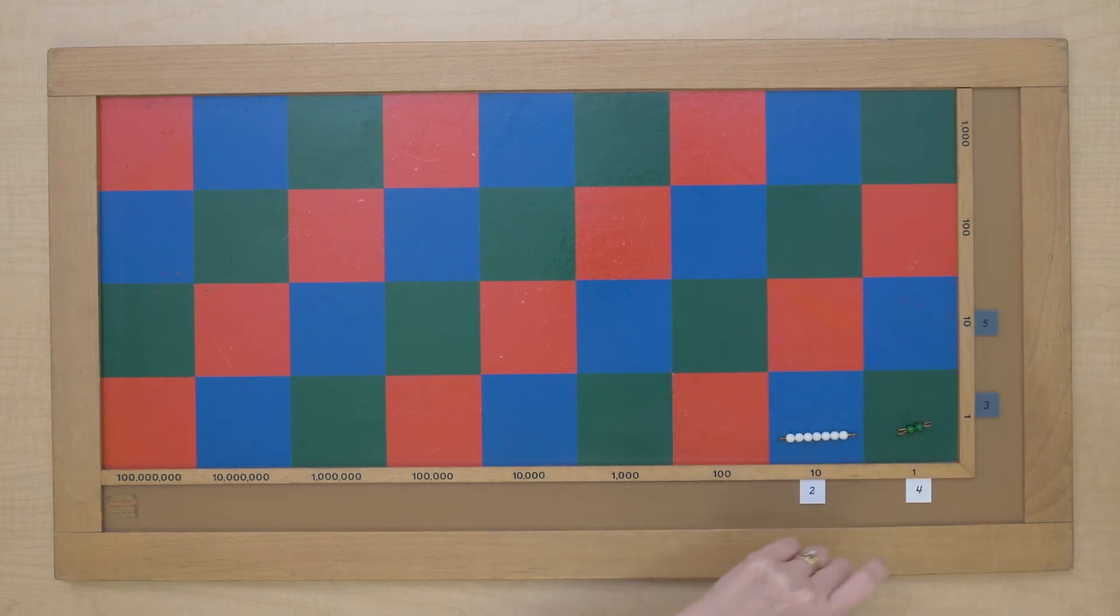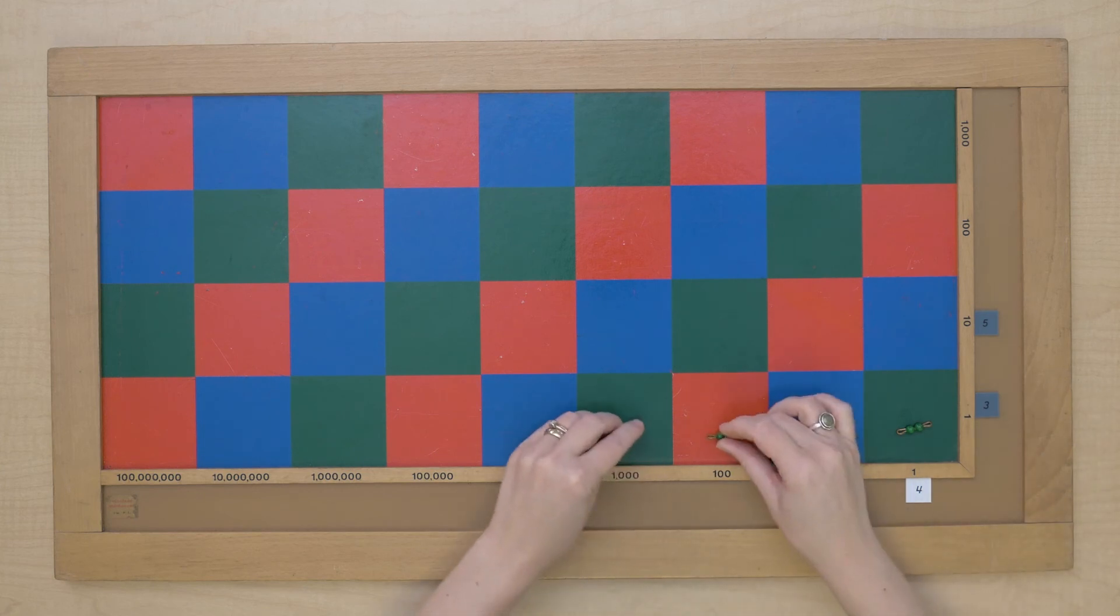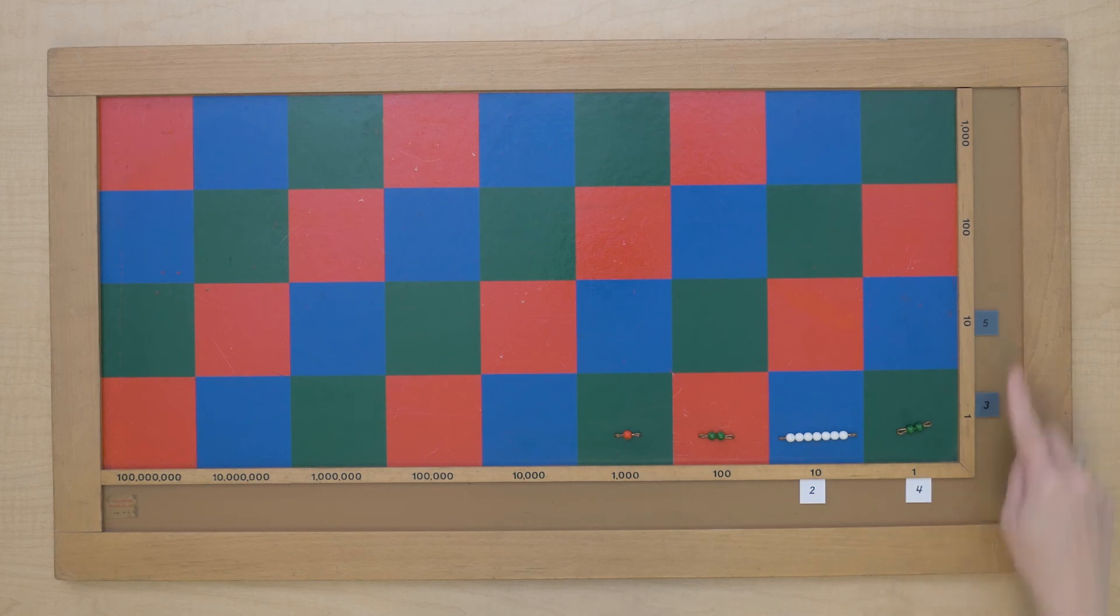And since that's our last multiplication, we can put all the beads down. So 24 times 53 equals 1,272. Let's do more problems like this where you're remembering the quantities and only placing the final quantity on the board.